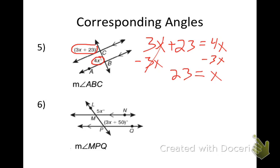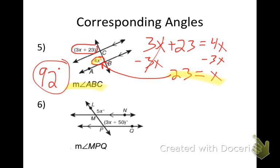Is that my answer? No, because what is it actually asking me? It wants me to find angle ABC, which is 4X. So I take 23 and plug that in for X: 4 times 23 gives me an angle of 92 degrees.